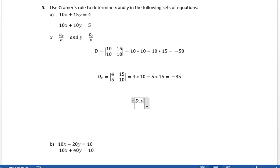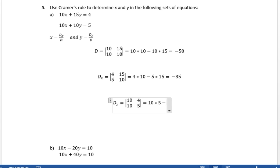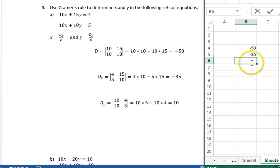And what is Dy? Well, for Dy, we stick in for the 15 and then 10, multiplying the y, we stick in the 4 and the 5. So for Dy, we have 10, 4, and 10, and 5. And what is this determinant? Well, it's 10 times 5 minus 10 times 4. That's 50 minus 40 is 10.